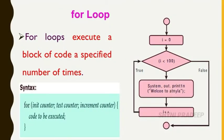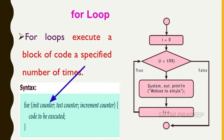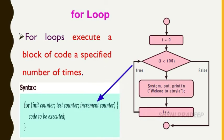The for loop executes a block of statements a specified number of times. This involves the same four steps: initialization, condition, statements, and increment. Within the parenthesis you write the initialization value, then the condition (test counter), then the increment counter. After that, write the block of statements within the curly braces.